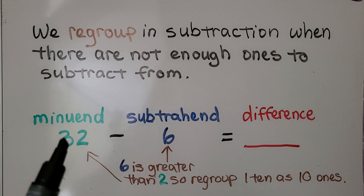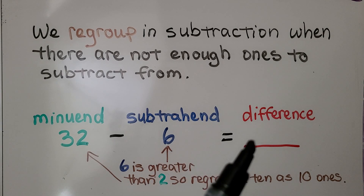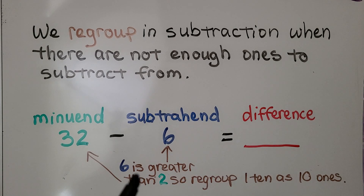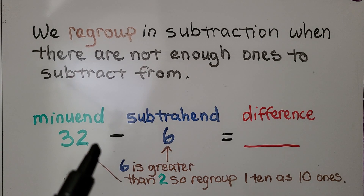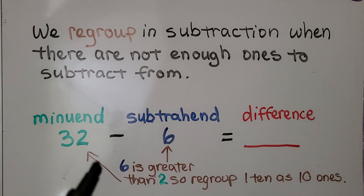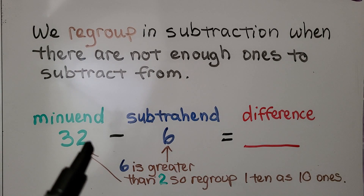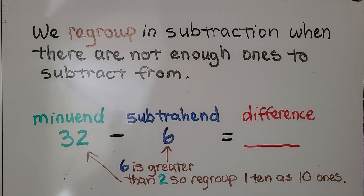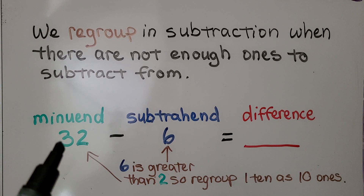We have our minuend, our subtrahend, and our difference is the answer. When we look at this, we are trying to take 6 from 32, and this 6 is greater than the 2 in the ones place of the minuend. So we would regroup one 10. One of these three 10s would get regrouped as 10 ones.